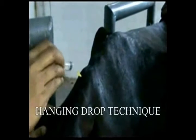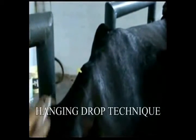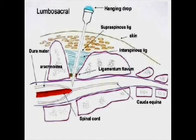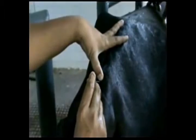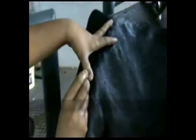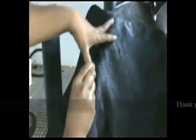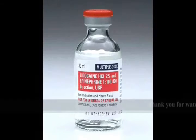Aspiration of a few drops of anaesthetic solution from the hub into the needle — the hanging drop technique — and minimal resistance to injection indicate correct placement. If the needle is inserted carefully, one can often feel the point of the needle pop through the thick connective tissue sheath covering the nerve.